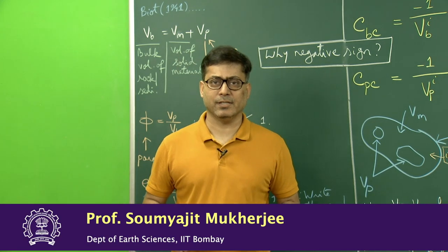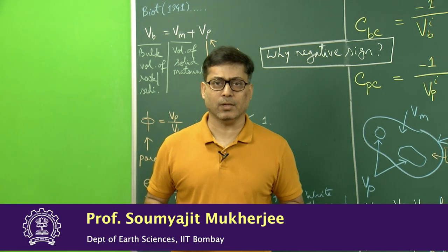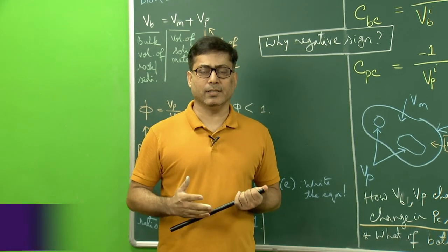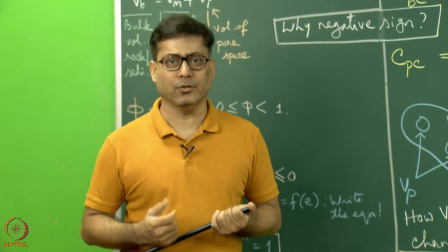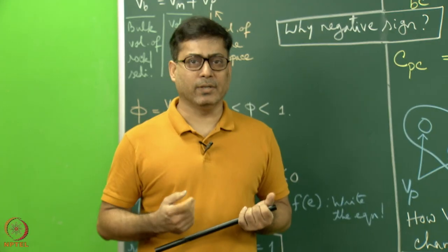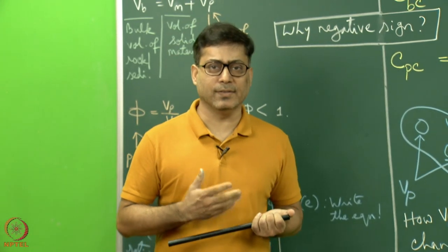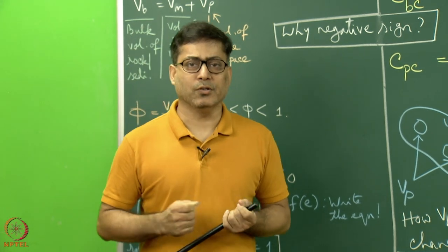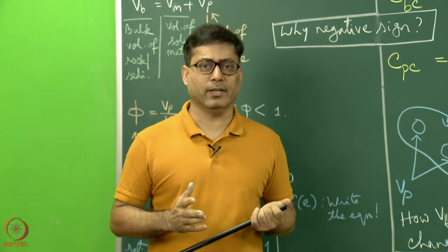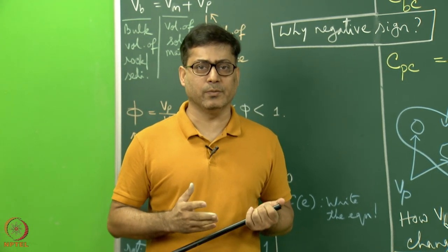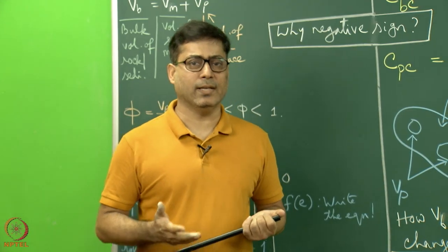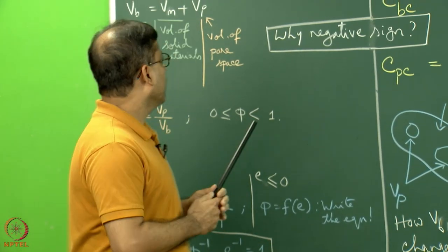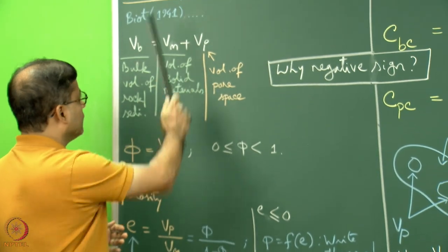In previous lectures, we discussed how stress and strain can be related in the case of an isotropic rock. We looked at fluid behavior — Newtonian viscous and non-Newtonian viscous behavior briefly. Then we constructed the matrix and looked at Hookean solid behavior, and also looked at anisotropic materials. Here we are going to cover the topic of poro-elasticity.